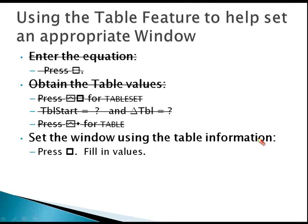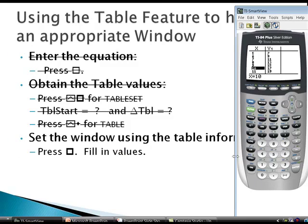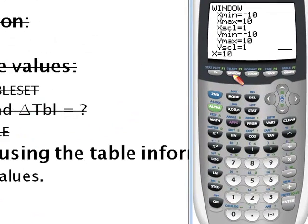So our next step would be to set the window using the information from the table. So I go back to my window. And now my Y min we're going to use negative 25, and my Y max we're going to use positive 20.